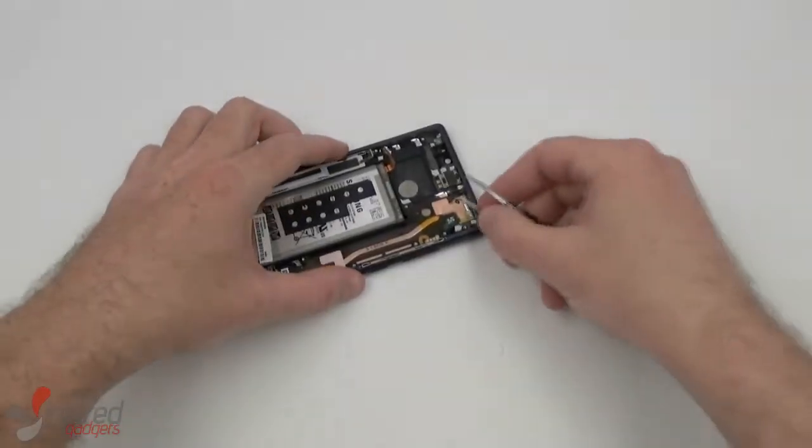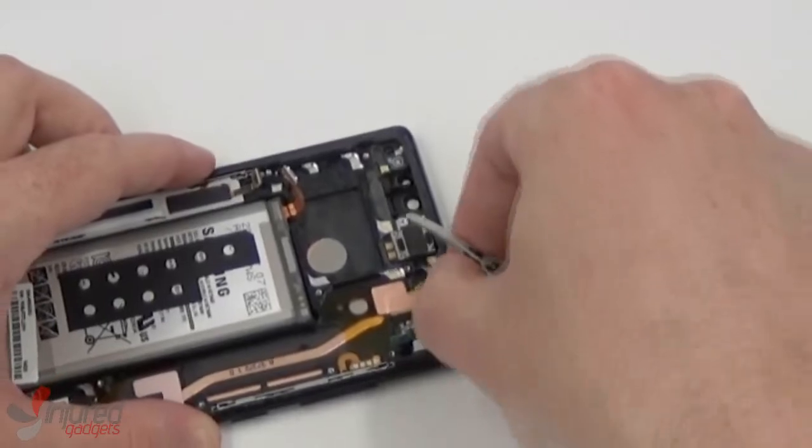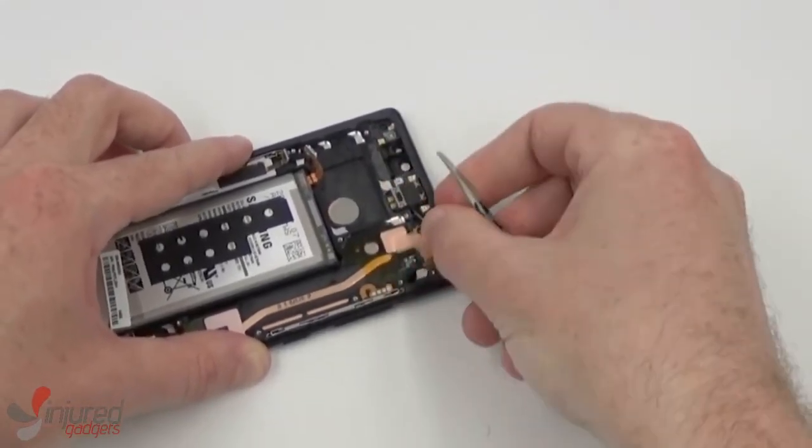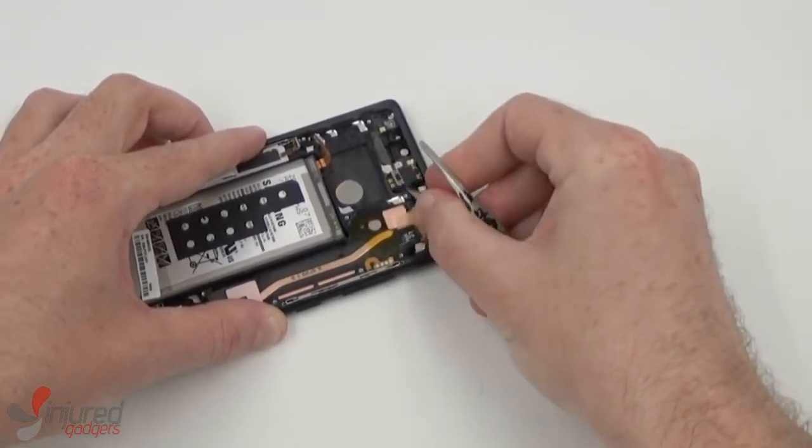Now we will remove the ear speaker. There's a little notch on the side that you can fit some blunt nose tweezers in, and again, wiggle and pry it loose from the frame.